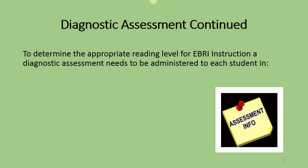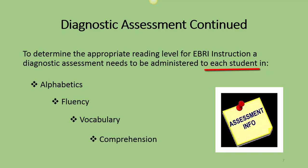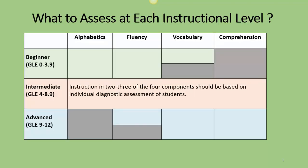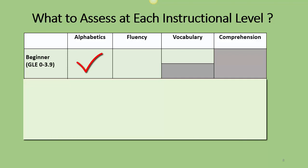To determine the appropriate reading level for your EBRI instruction, a diagnostic assessment needs to be administered to each student in alphabetics, fluency, vocabulary, and comprehension. For the beginning level — grades 0 to 3.9 — because your focus of instruction is really only in alphabetics, fluency, and vocabulary, your priority areas for assessment will be alphabetics and fluency.